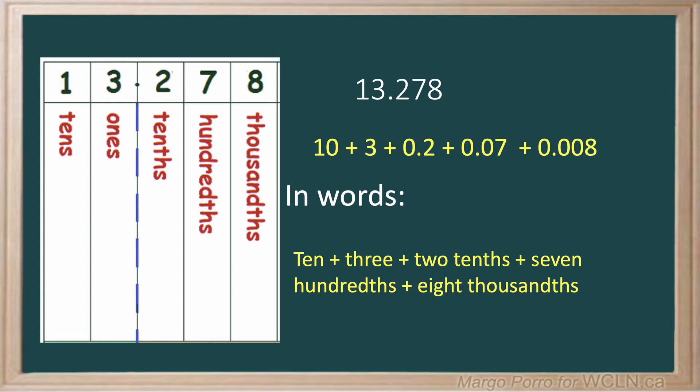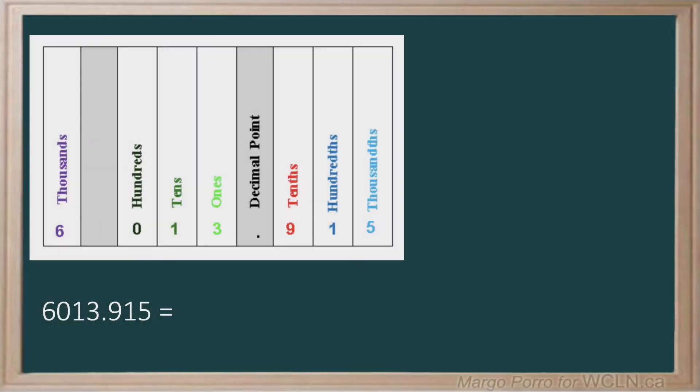The next number we will look at is a bit trickier. Notice what happens when 0 is one of the actual digits in a number. We'll start with the 6 in the thousandths place, which is written as 6 thousand. Since there are 0 hundreds, we don't actually include it in the expanded form.